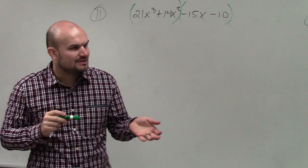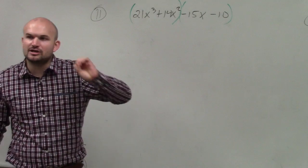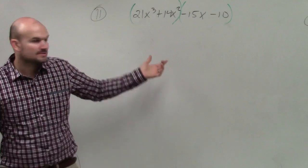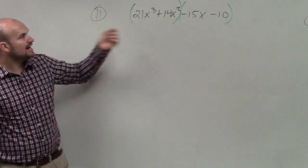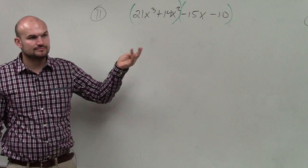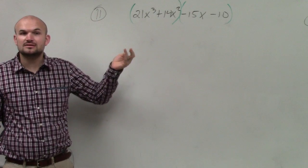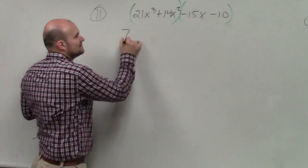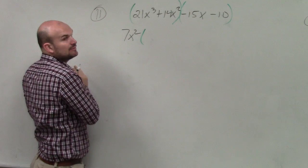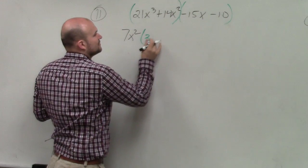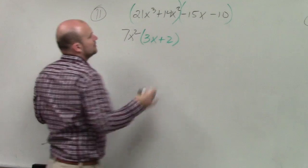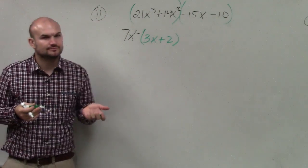Then by grouping them, now what you do is factor out the GCF, the greatest common factor of each grouping. So 21x³ and 14x², what do those have in common? 7x². So you factor out a 7x². So therefore, I'm going to do this in green. What's left over is a 3x+2. Would everybody agree with me? Yes. OK.